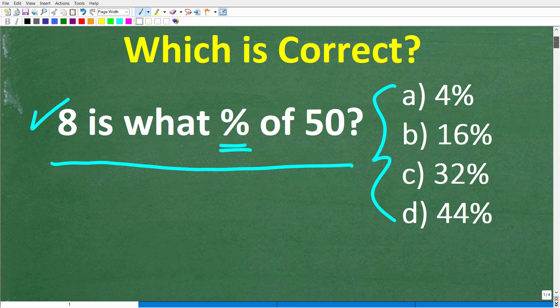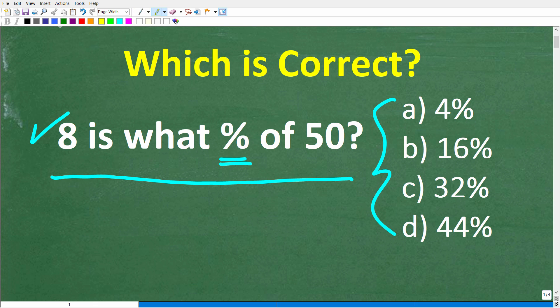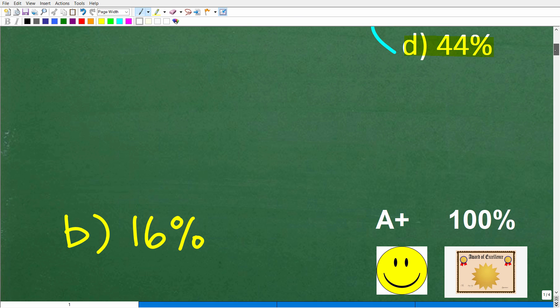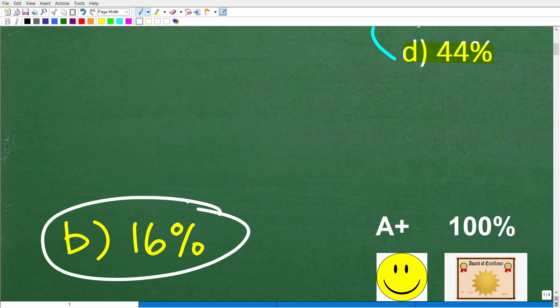So again, you can use a calculator here, but it's not necessary. 8 is what percent of 50? Our first choice, A is 4%, B is 16%, C is 32%, and D is 44%. Let's take a look at the answer. The correct answer is B, 16%.